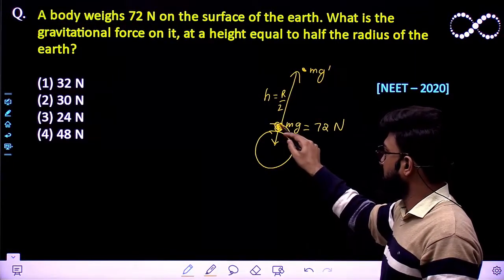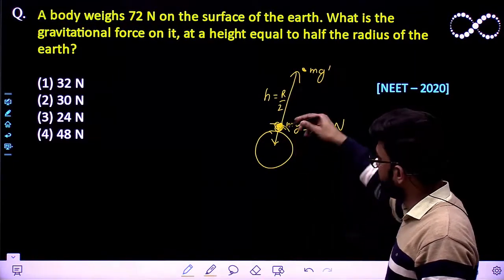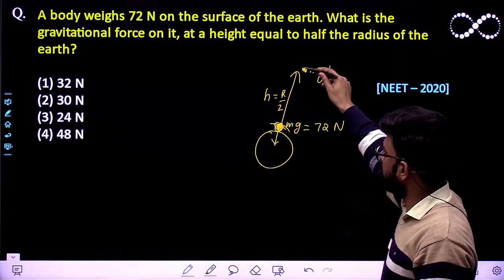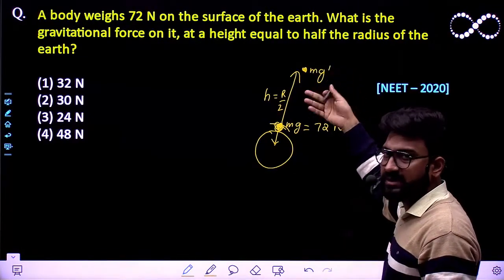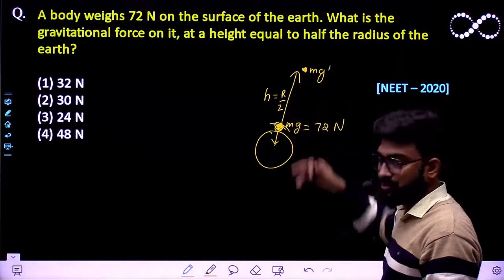So at certain height, its mass is m and acceleration due to gravity let it be g dash. So the weight is m into g dash.